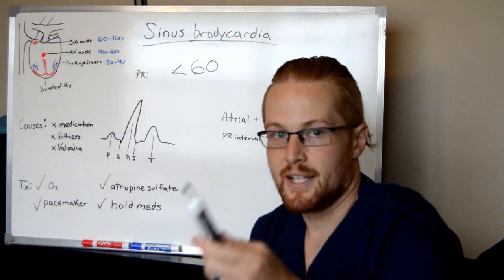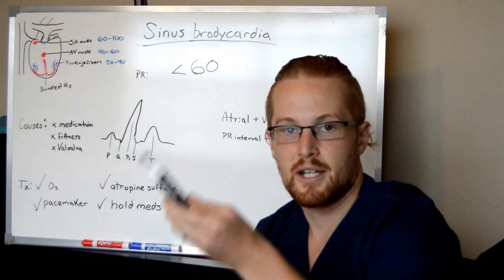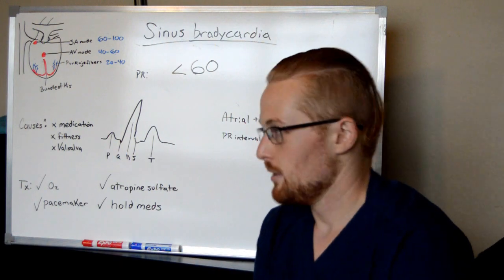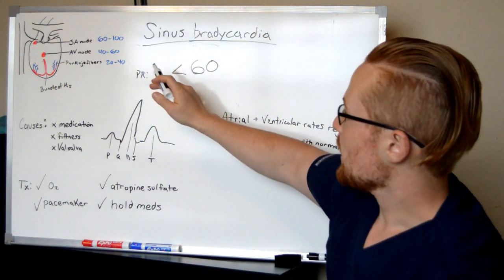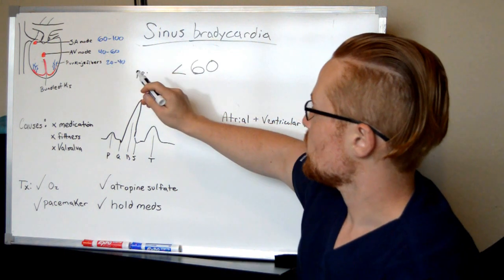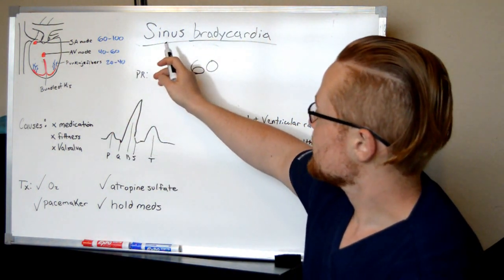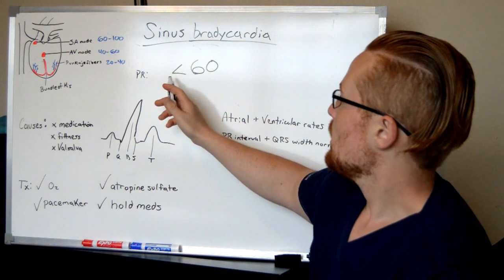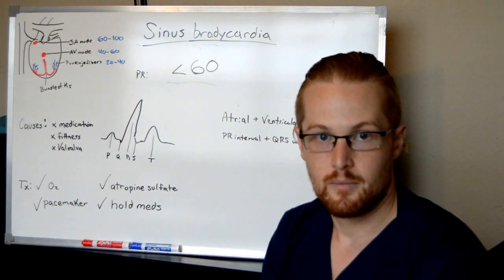Brady means below the normal amount. If you think of bradypnea, which is slow breathing, bradycardia means slow heart rate. The normal range for the SA node is 60 to 100, which would be normal sinus rhythm. However, in sinus bradycardia, it's still coming from the SA node, but the heart rate is below 60.